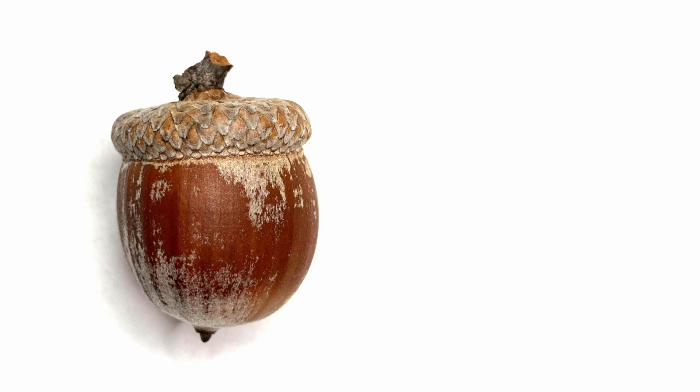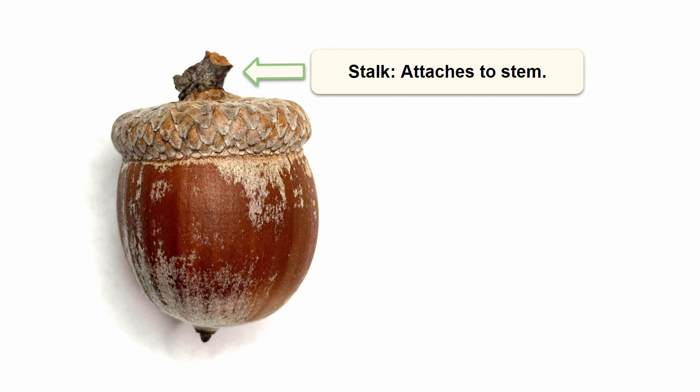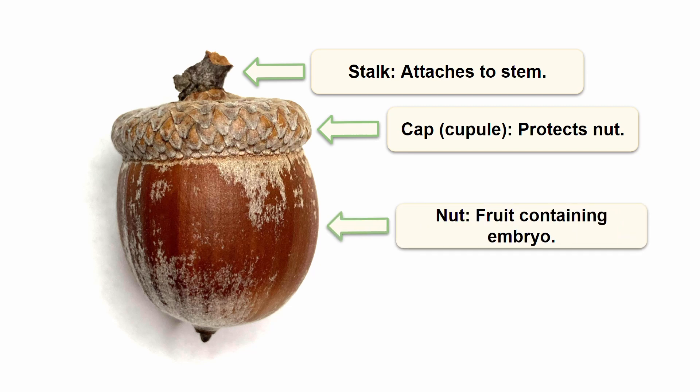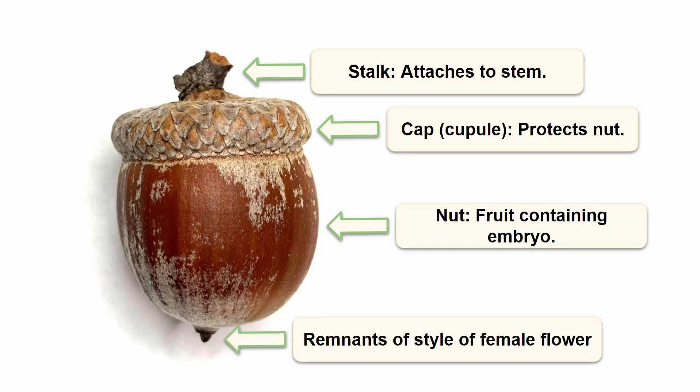Now let's talk about the anatomy of an acorn, which is actually a pretty simple one. At the top there is a stalk where it attaches to the stem, then there's a cupule or cap of scales, and this cap is protecting the precious nut. At the very bottom of the acorn is what remains of the style of the female flower.